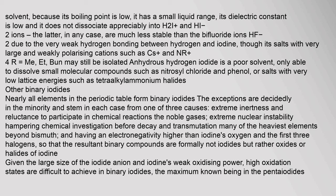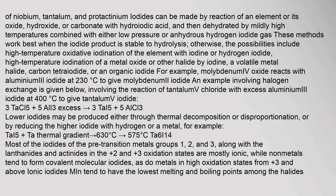Other Binary Iodides: Nearly all elements in the periodic table form binary iodides. The exceptions stem from one of three causes: extreme inertness (the noble gases), extreme nuclear instability hampering chemical investigation before decay (many of the heaviest elements beyond bismuth), or having an electronegativity higher than iodine's, such that the resultant binary compounds are formally oxides or halides of iodine rather than iodides. Given the large size of the iodide anion and iodine's weak oxidizing power, high oxidation states are difficult to achieve in binary iodides.